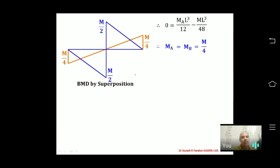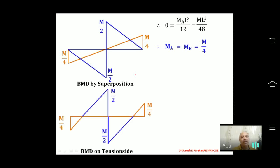For a couple M acting at the center, the fixed end moments on both sides are equal and equal to M/4, with both in the clockwise direction (same as the couple). The final BMD is plotted by superimposing the simple support and fixed end moment diagrams.